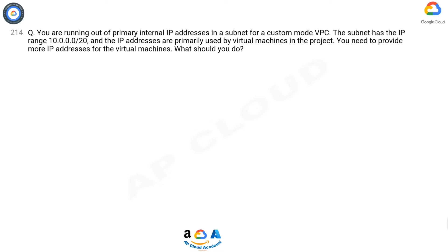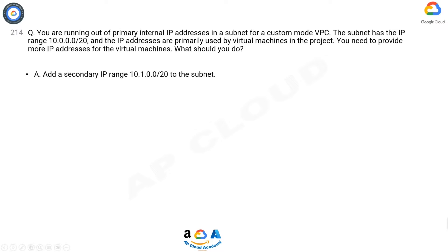Question 214. You are running out of primary internal IP addresses in a subnet for a custom mode VPC. The subnet has the IP range 10.0.0.0/20 and the IP addresses are primarily used by virtual machines in the project. You need to provide more IP addresses for the virtual machines. What should you do?